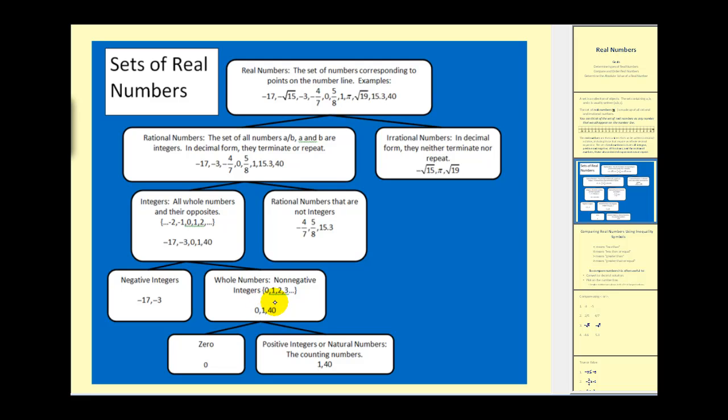And then we can break down whole numbers into 0 and positive integers. The only difference between a positive integer and a whole number is 0 is not considered a positive integer. Sometimes these are called natural numbers or counting numbers.